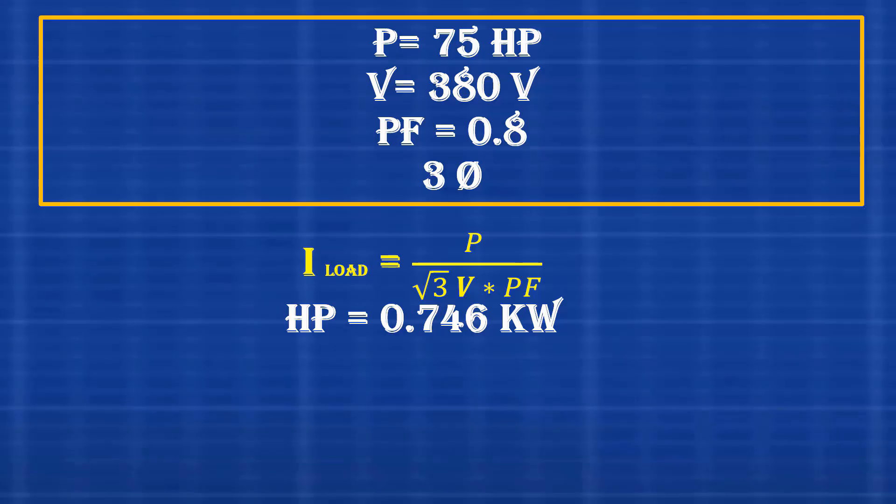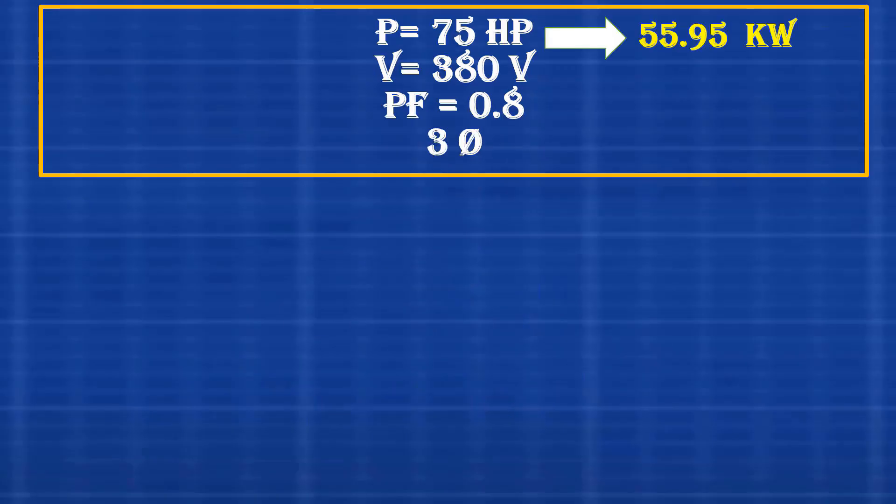Conversion is 1 horsepower equals 0.746 kilowatts. So, power in kilowatts equals 75 horsepower multiplied by 0.746, which equals 55.950 kilowatts, approximately 55.95 kilowatts.